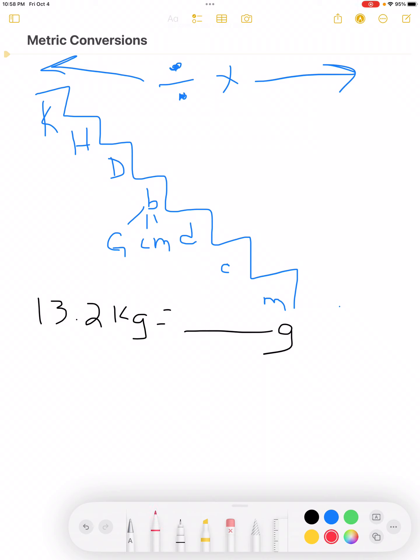Kilograms is here. We're going to jump to grams. One, two, three. We jump three times. And then we jump to the right or down the stairs. That means we're going to multiply by a one with three zeros behind it because we did three jumps.